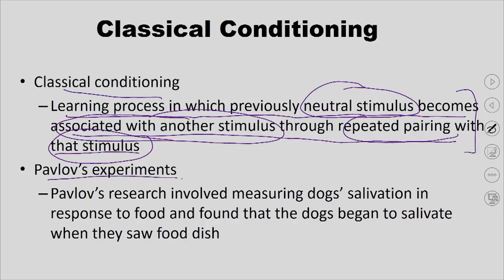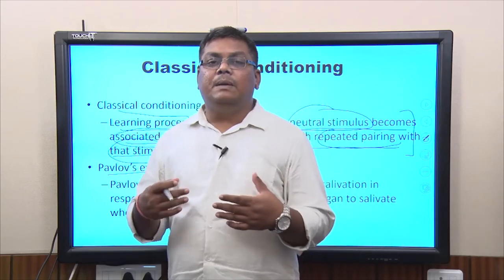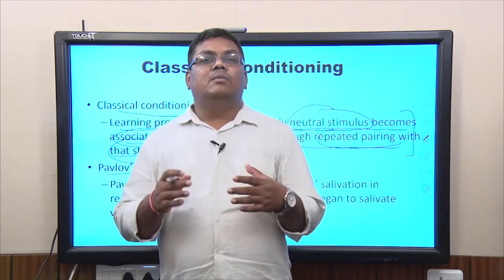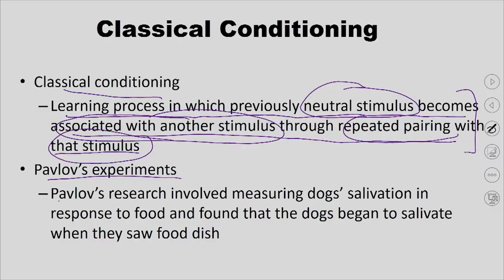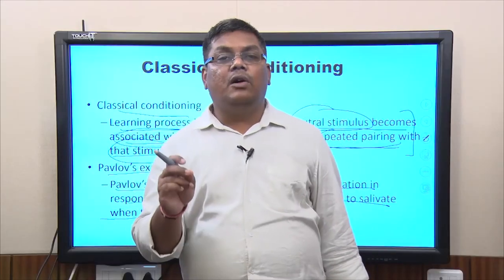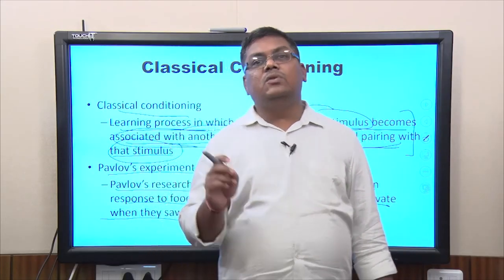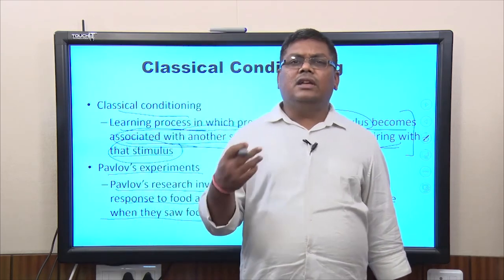The idea of classical conditioning started from Pavlov's lab where he was training a dog. Ivan Pavlov was a Russian physiologist working with the digestive systems of dogs — he got a Nobel Prize for that — and he is also known for making people understand associative learning and classical conditioning. Pavlov's research involved measuring dogs' salivation in response to food, and he found that dogs begin to salivate when they saw the food dish.